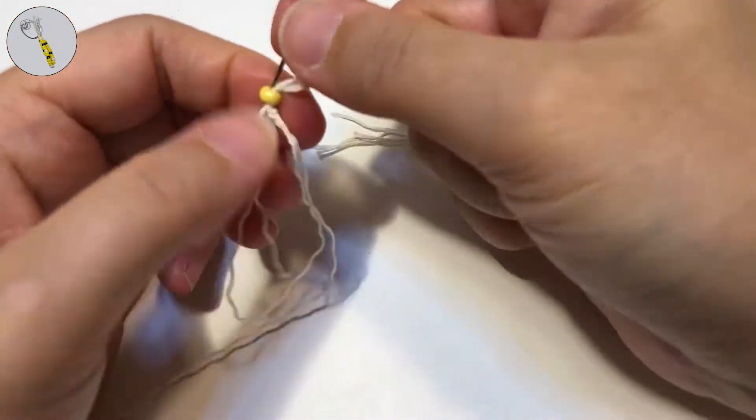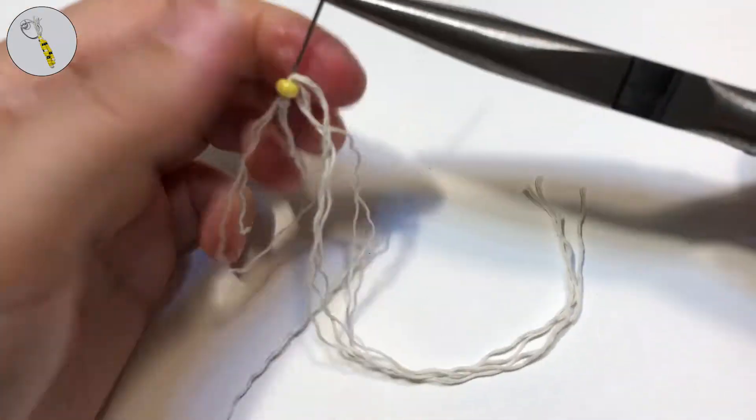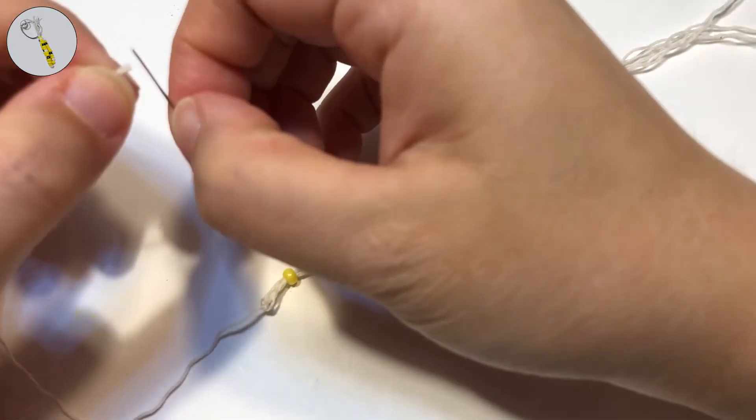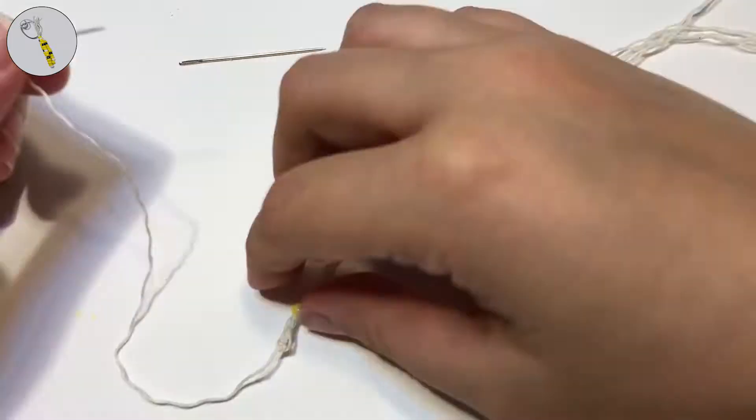That's why I like to use a pair of pliers to help. For the last bead you might have to switch to a smaller embroidery needle in order to get it through.